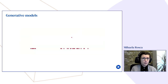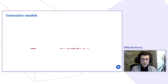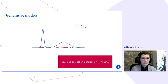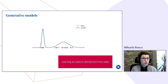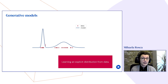Consider a simple 1D example — this is our dataset, and we're trying to answer the question: what kind of distribution could have generated this data? We can answer this in two ways. First, we can learn an explicit model of the data, a probability distribution, and use it to answer questions like how likely is it that a point comes from the original distribution. We can also sample from this model to generate new data. This type of model is called an explicit model.